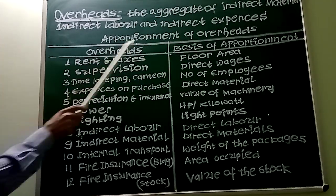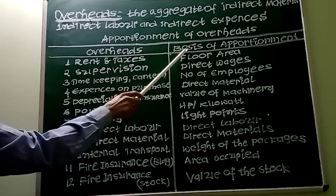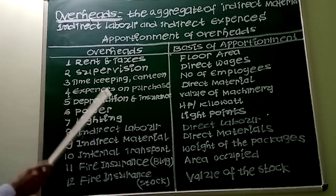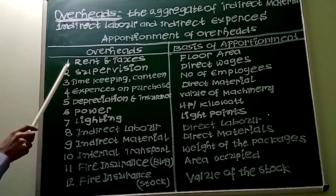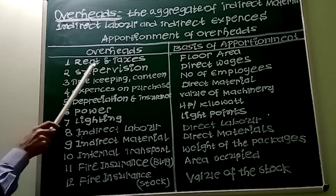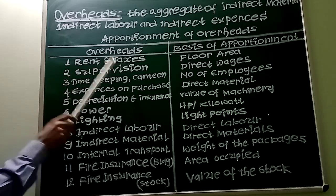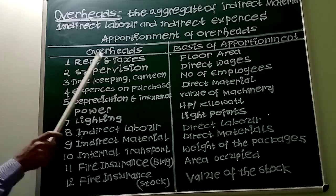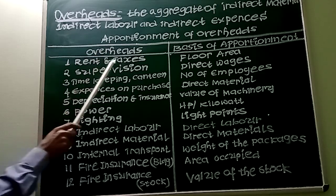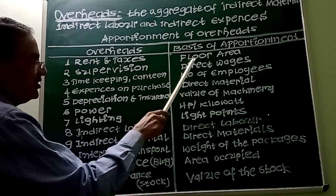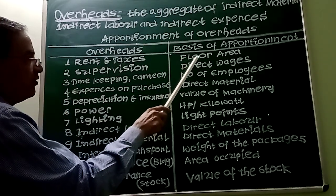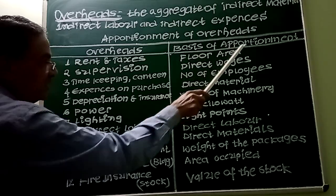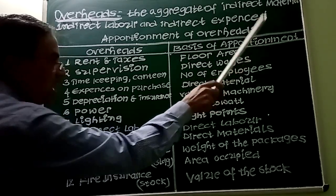This column is for overheads and this column is for basis of apportionment. Item number 1: Rent and taxes can be apportioned on the basis of floor area — in other words, area occupied.